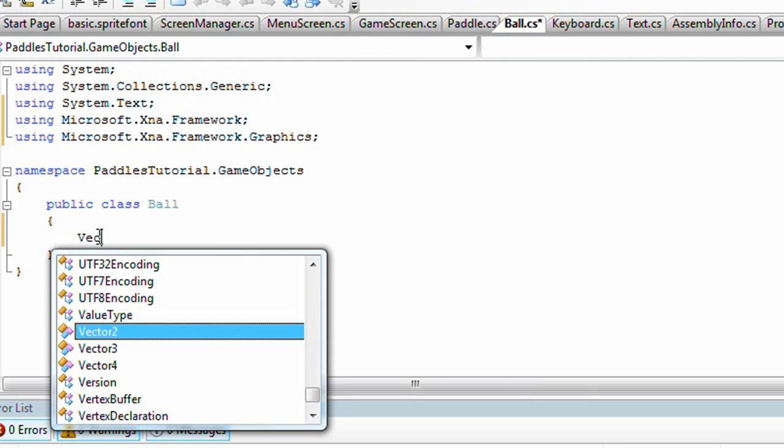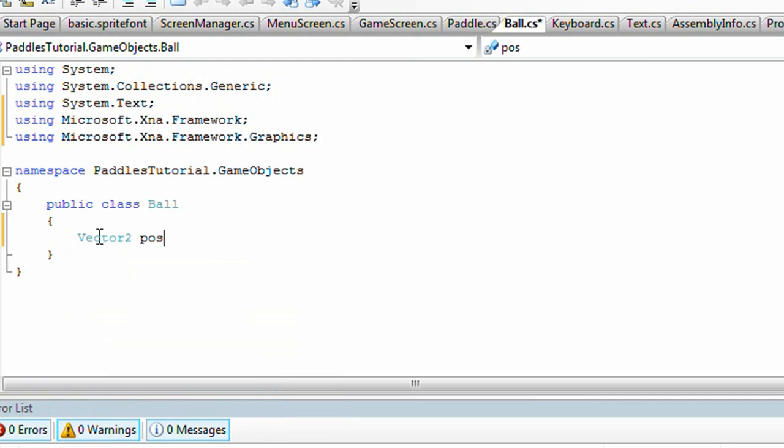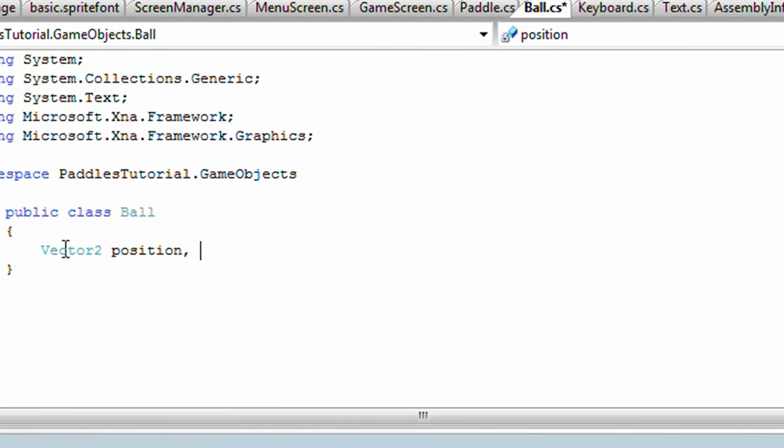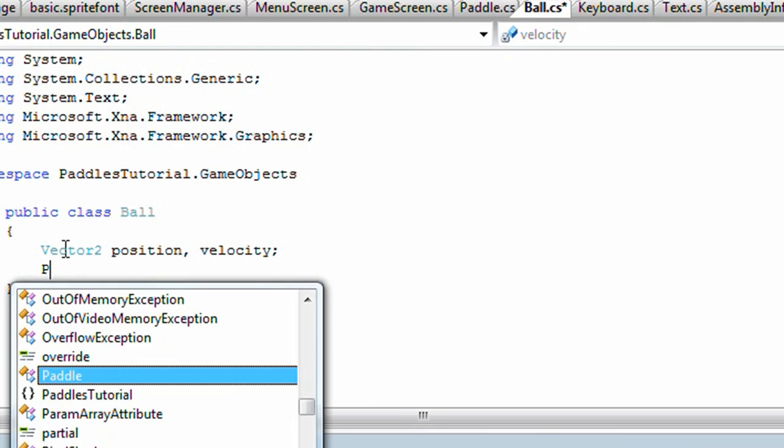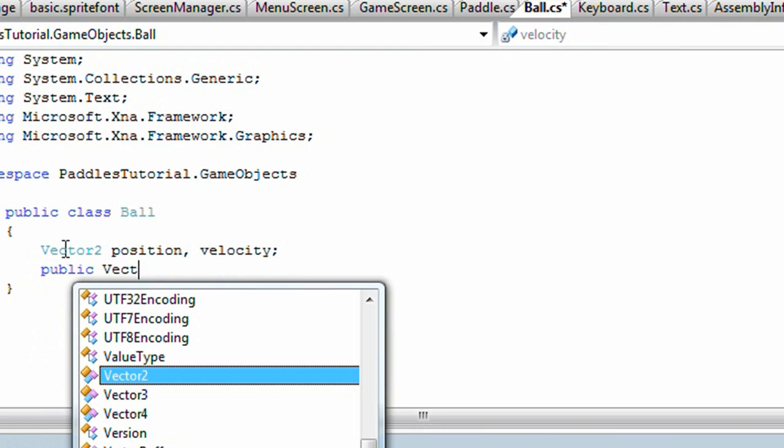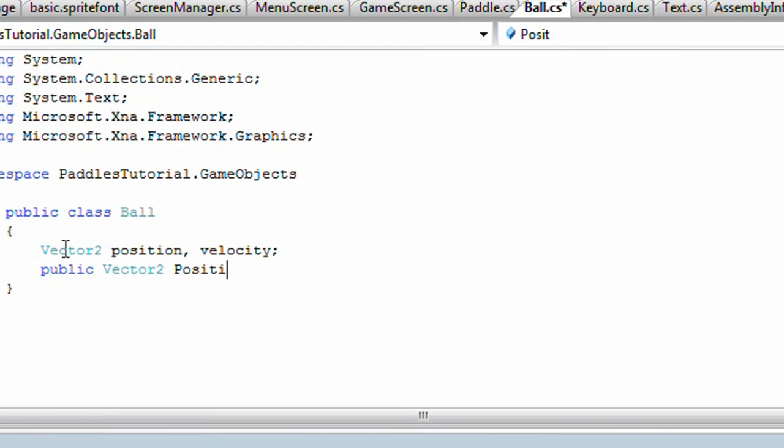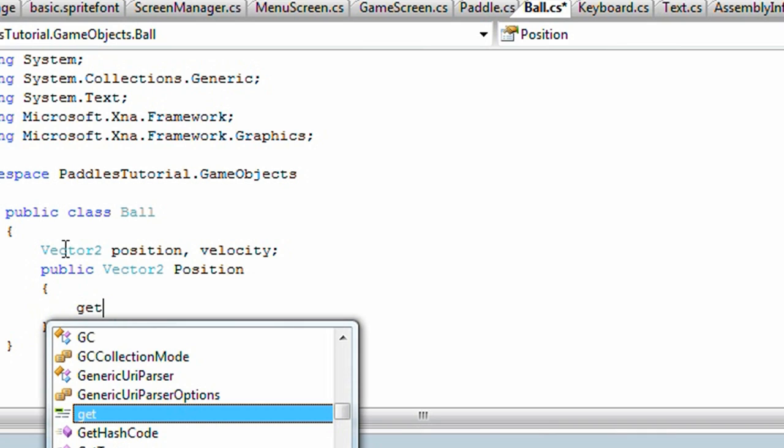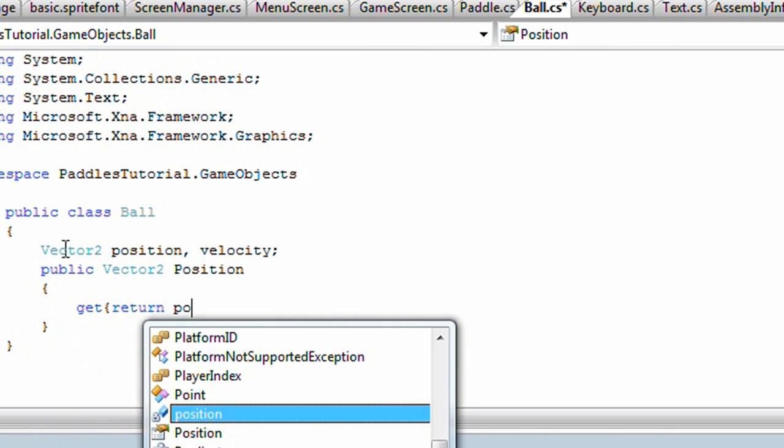Okay. So two Vector2s. A position and a velocity. Now we need two of those properties. Public Vector2 Position.